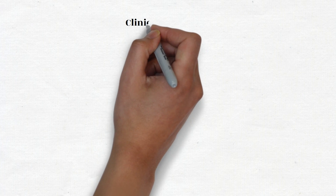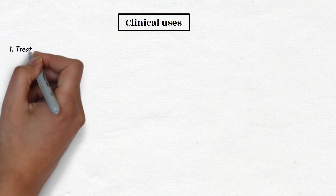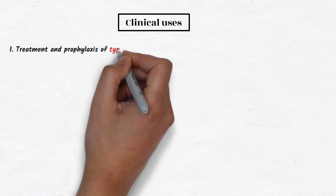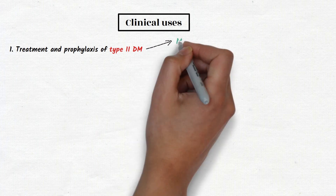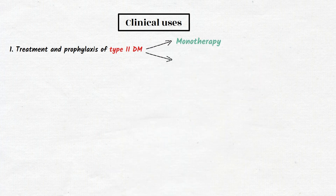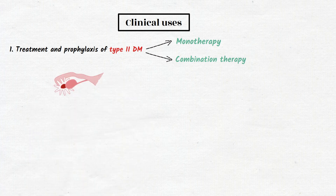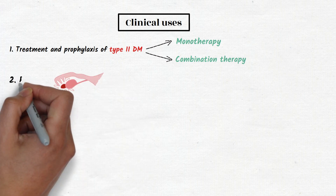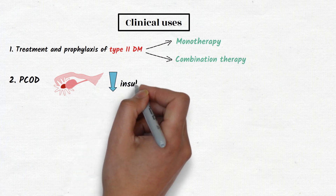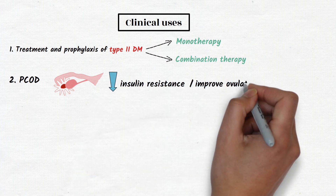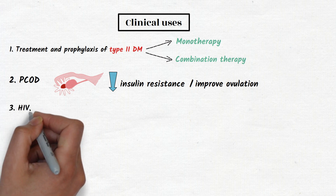Metformin is the drug of choice for treatment and prophylaxis of type 2 diabetes mellitus. It is used as monotherapy or in combination with other oral hypoglycemic agents. Metformin is also used in PCOD to decrease insulin resistance and improve ovulation, and is also used in metabolic syndrome.